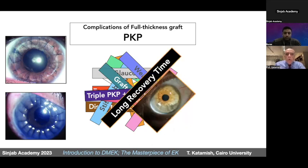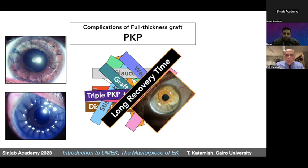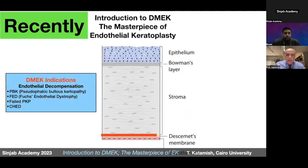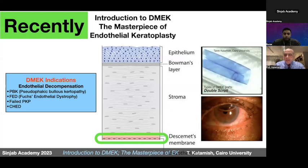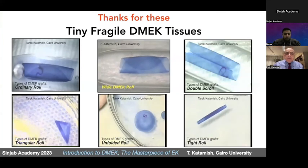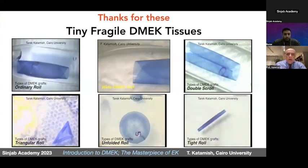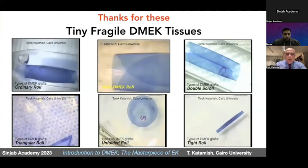Even if you pass all these obstacles and complications and achieve a beautiful outcome, you have to wait at least one year to reach it. So the treatment of endothelial decompensation by penetrating keratoplasty, in my opinion, is not the best option. Recently, if we have just a disease in the endothelium, we can replace this diseased endothelium with another healthy endothelium, leaving the whole cornea untouched. This is a magic solution — thanks to these tiny, fragile DMEK tissues.